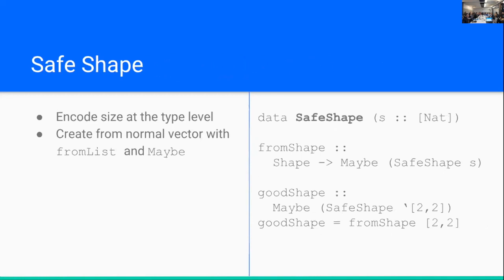So we can use this idea to create something called a safe shape. Whereas the sized vector parametrizes by a single natural number, the number of elements in our vector, we're going to parametrize our type by a list of natural numbers. And so we're going to encode the shape of our tensor at the type level. And so we can use this. We can get a very similar fromShape function. And a very similar example. So we have a 2 by 2 matrix. We make the shape for that matrix like so.